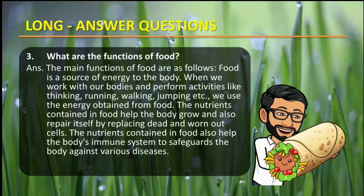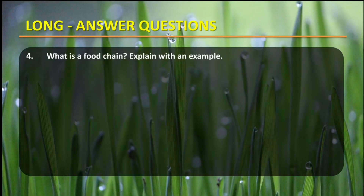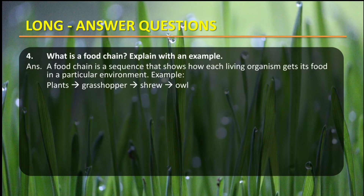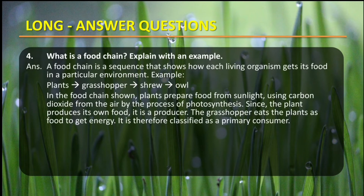Fourth question: What is a food chain? Explain with an example. A food chain is a sequence that shows how each living organism gets its food in a particular environment. Example: plants are eaten by grasshopper, grasshopper is eaten by shrew, and shrew is eaten by owl. This is how they are dependent on each other in a food chain.